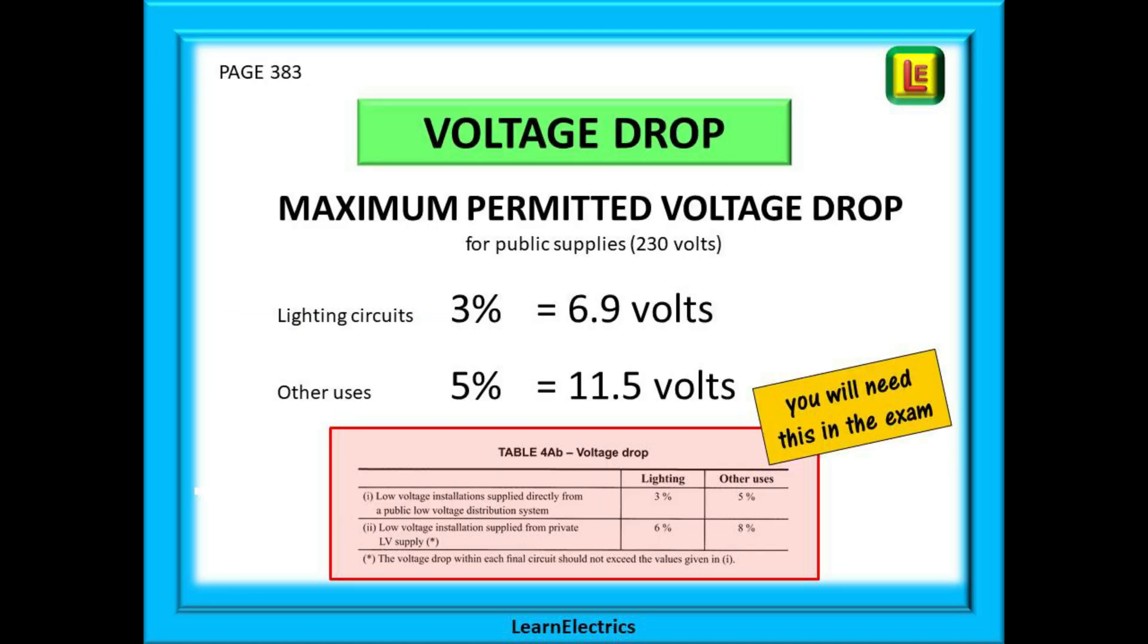Voltage drop is another favorite calculation for exam setters. First of all we need to know what is the maximum permitted voltage drop for a public supply at 230 volts such as we have in the UK. On page 383 we will find table 4AB. This tells us that for lighting circuits the voltage losses in the actual conductor should not exceed 3% of 230 volts which is 6.9 volts maximum. And for all other circuits the maximum is 5% or 11.5 volts.